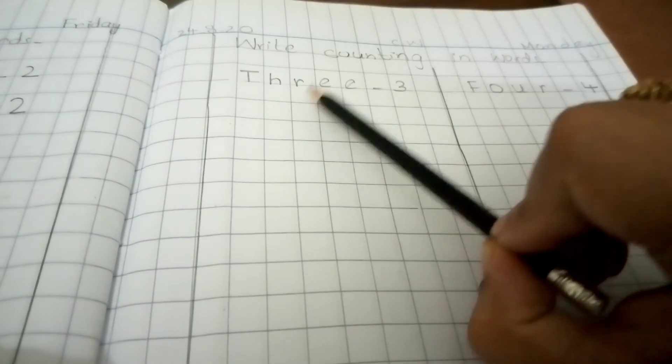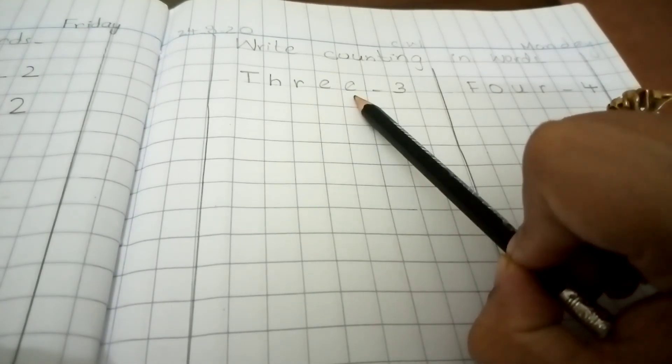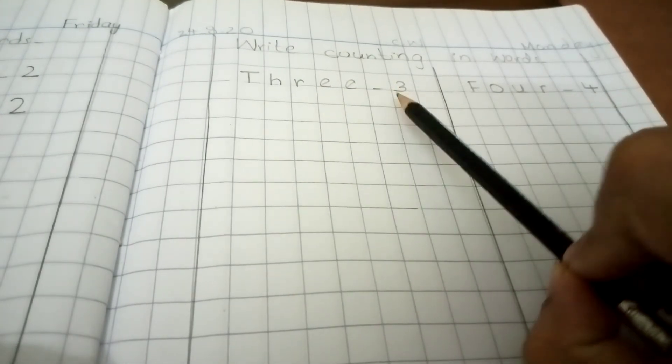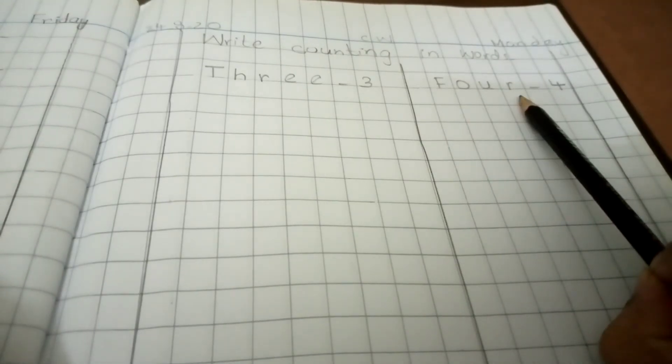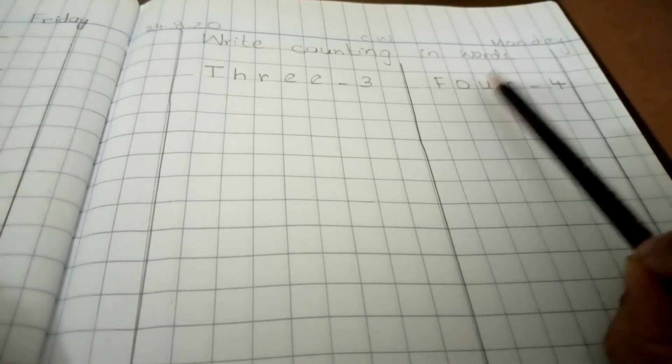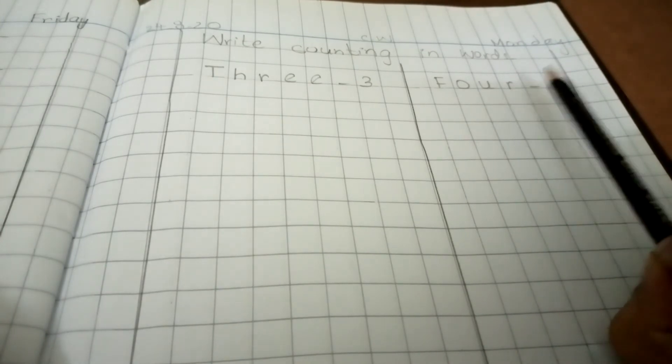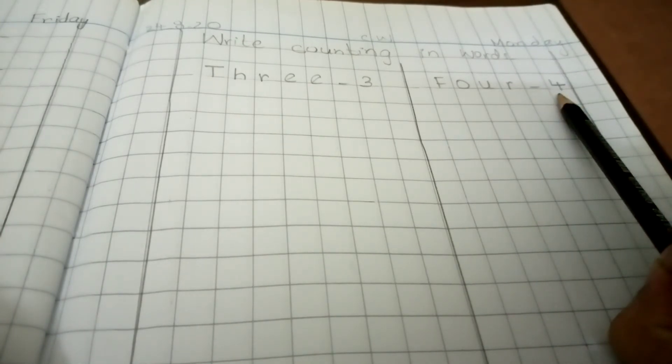r-e-e. Three. In number you will write also f-o-u-r, four. F-o-u-r, four. And you will write also in number, okay?